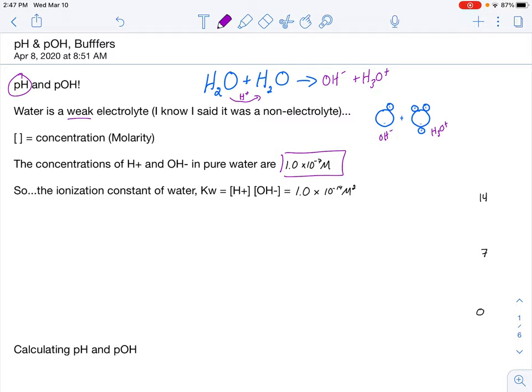There's something called the ionization constant of water, which we're going to be using in calculations, the Kw. And if I multiply my two concentrations, 1.0 times 10 to the negative 7th times 1.0 times 10 to the negative 7th, I get 1.0 times 10 to the negative 14th molarity squared. That value allows us to calculate one of the concentrations if I know the other concentration. So that's kind of cool.